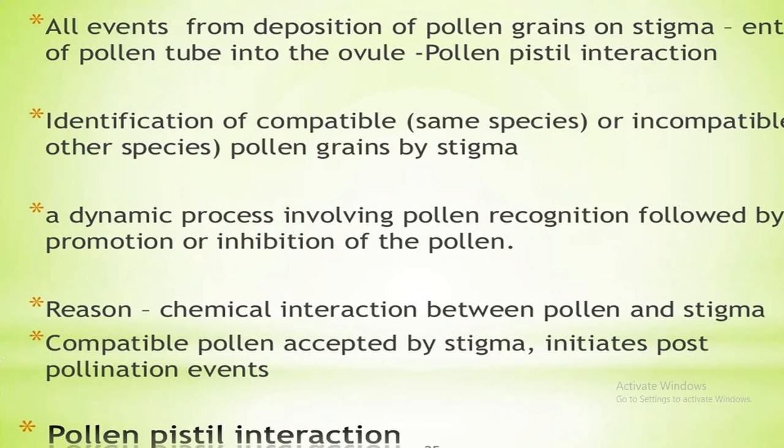It is an essential step in fertilization of angiosperms and determines compatibility and incompatibility of pollen and pistil. It is a dynamic process involving pollen recognition followed by inhibition or promotion of pollen. It includes different steps.